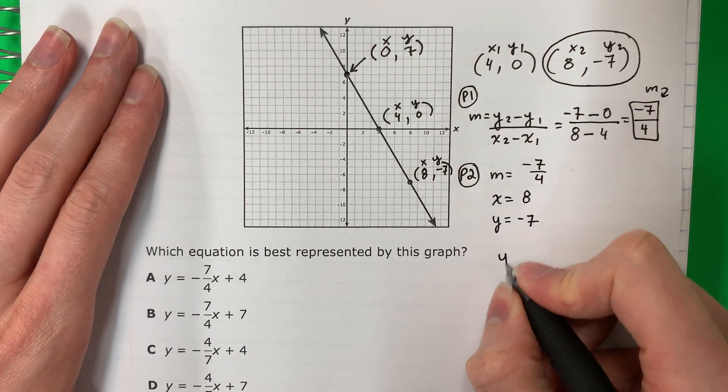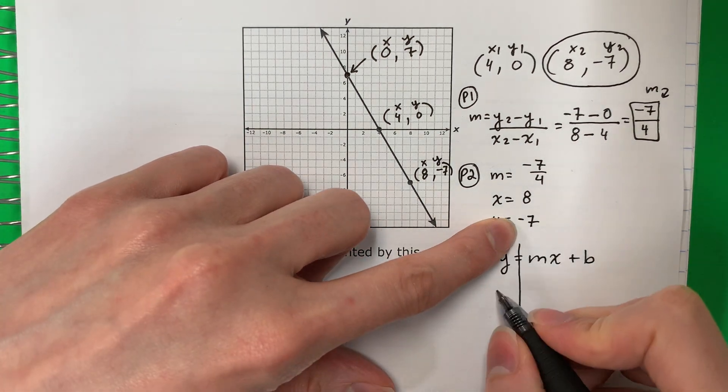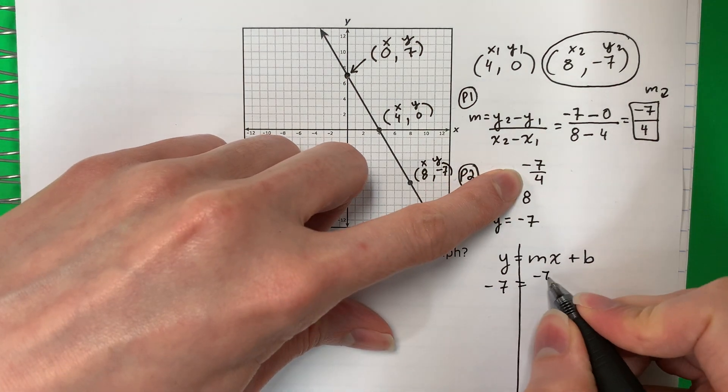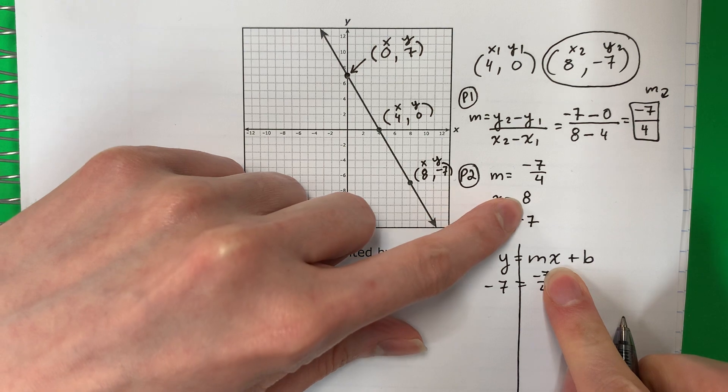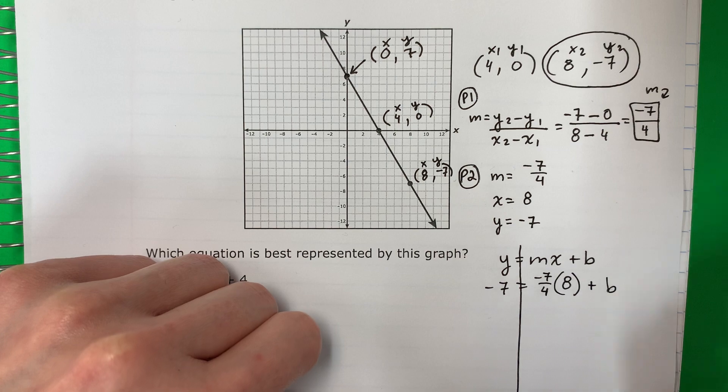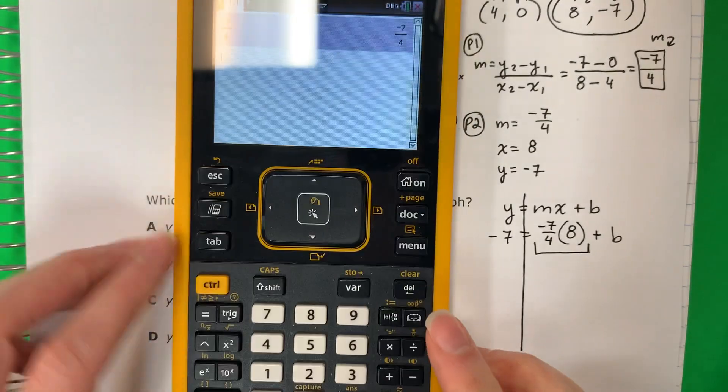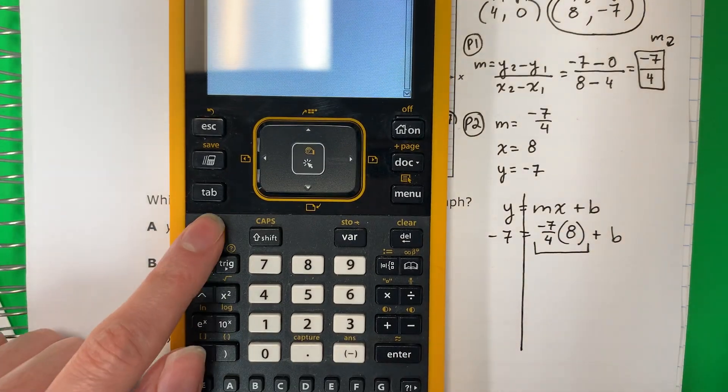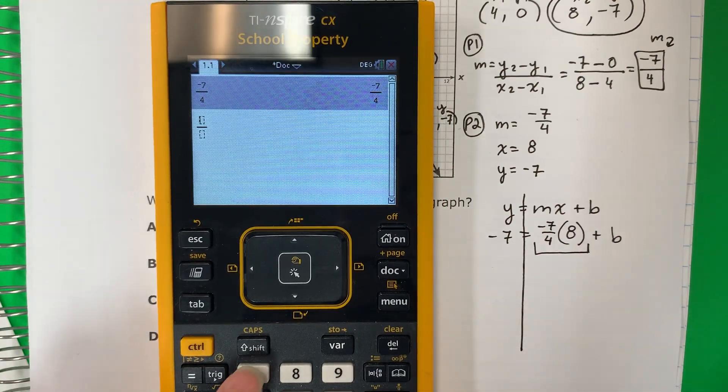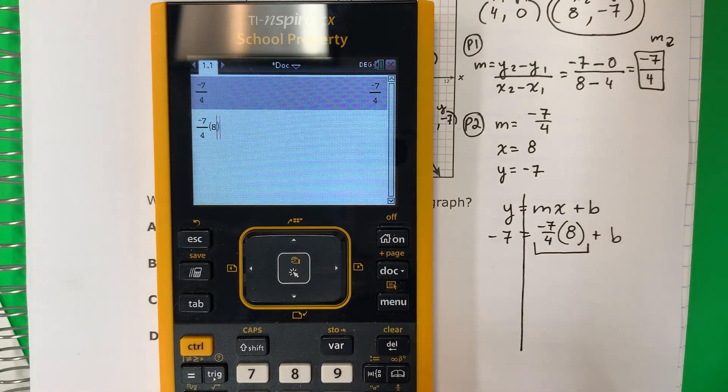So we're going to do the equation Y equals MX plus B. Y, negative seven equals M. M is negative seven fourths. X, X is eight in parentheses. Copy plus, copy B. Parenthesis first. Let's go ahead and put that in the calculator. So to do the fraction, you do control, divide. And then you're going to put negative seven down four. Go to the right, parenthesis eight, parenthesis enter.